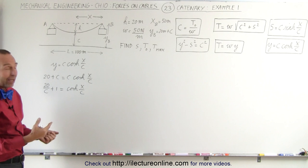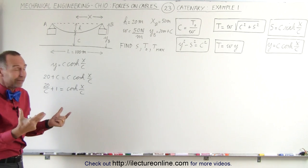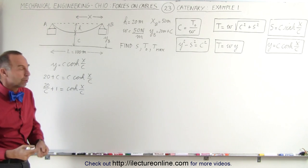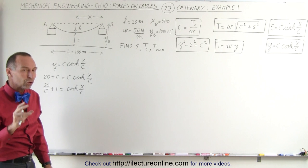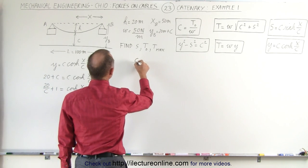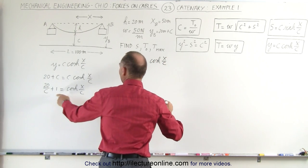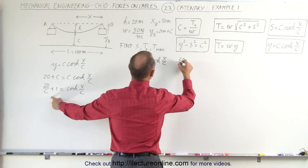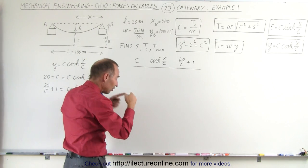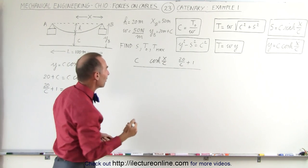At first you might say you can't figure that out because C appears on both sides of the equation. But we can solve it using an iterative process — and at some point you may want to use a small computer program. Let me show you what that process looks like; we can actually do it by hand with a calculator. We plug in values for C, calculate cosh(X/C), calculate 20/C plus 1, and keep zeroing in on the value of C that makes both sides equal. That will be our stopping point.